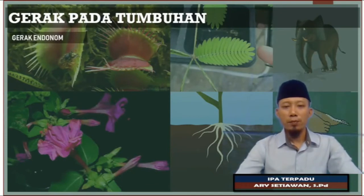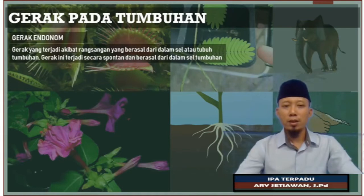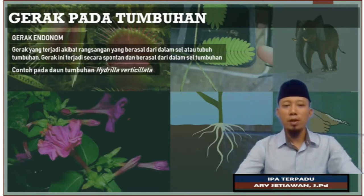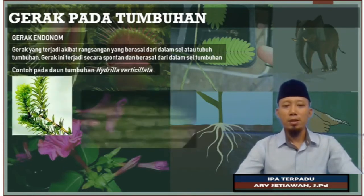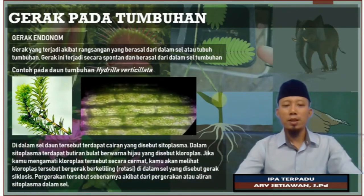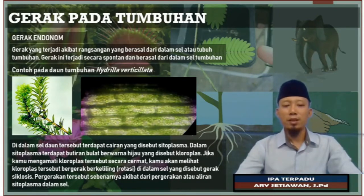Selanjutnya adalah gerak pada tumbuhan. Ada gerak endonom, di mana gerak yang terjadi akibat rangsangan yang berasal dari dalam sel atau dalam tubuh tumbuhan. Gerak ini terjadi secara spontan dan berasal dari dalam sel tumbuhan, misalkan pada tumbuhan hidrila. Salah satu contohnya bahwa yang bergerak di sini adalah cairan sitoplasma. Di dalam sitoplasma ini ada yang namanya kloroplas, kloroplas ini akan bergerak mengelilingi atau berotasi di dalam sel, sehingga disebut dengan gerak siklosis.